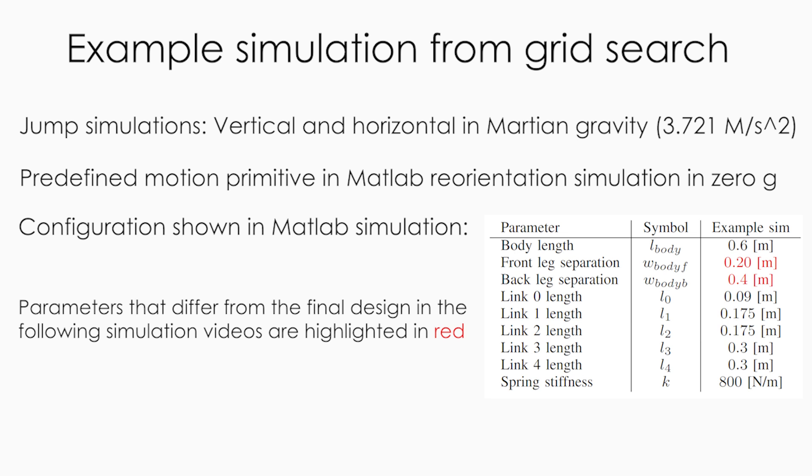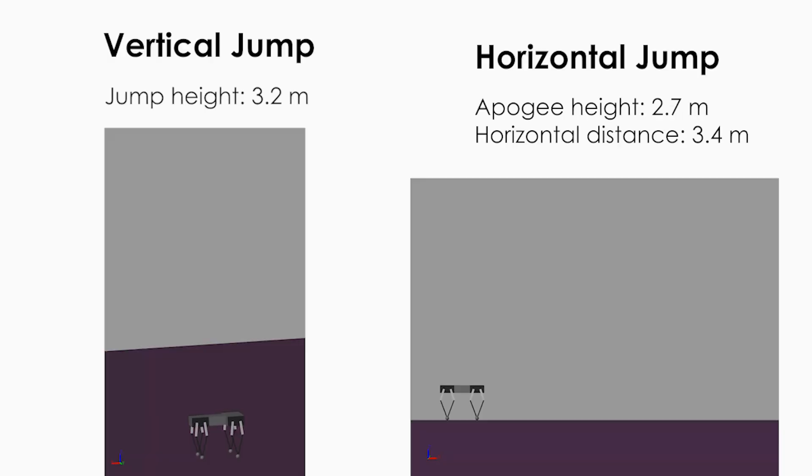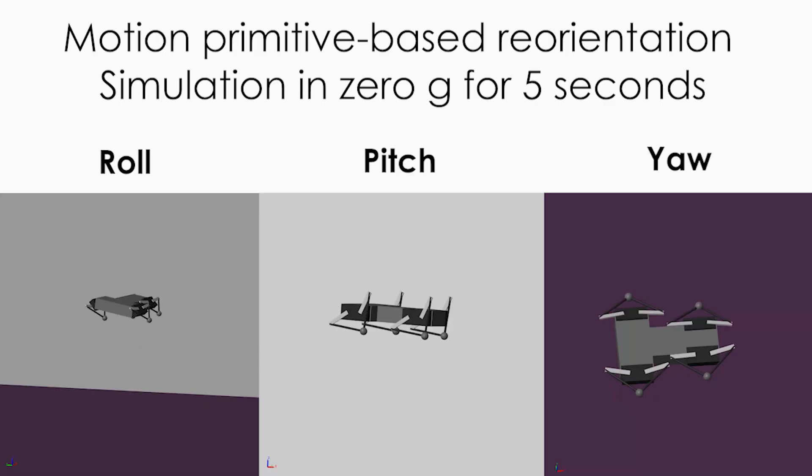One, maximizing jump height and distance. Two, enabling effective in-flight orientation. Simulations were conducted for vertical and horizontal jumps under Martian gravity while roll, pitch, and yaw maneuvers were simulated in zero gravity with predefined motion primitives.